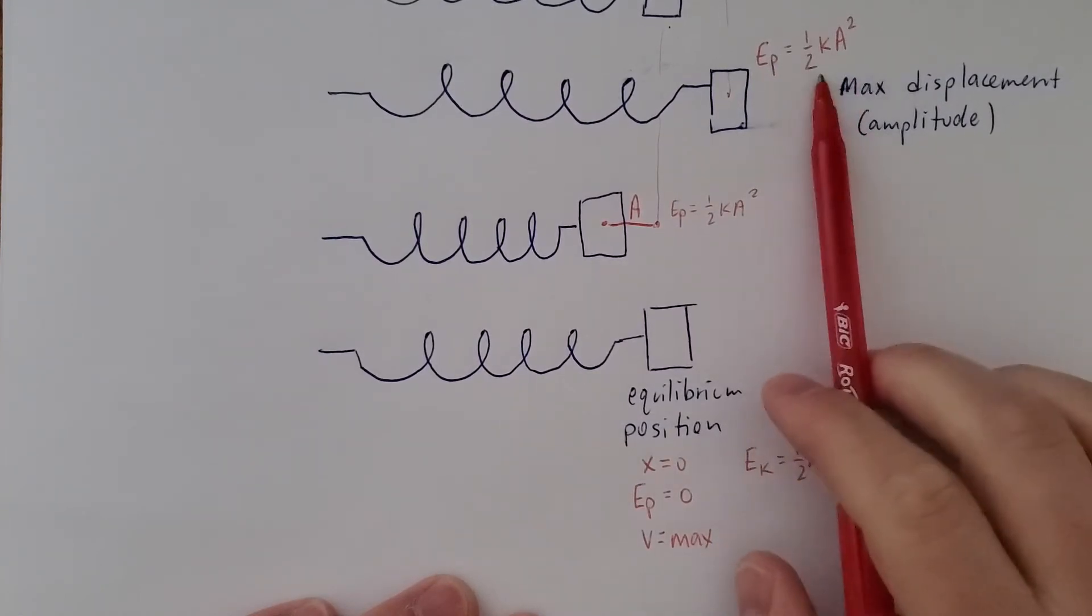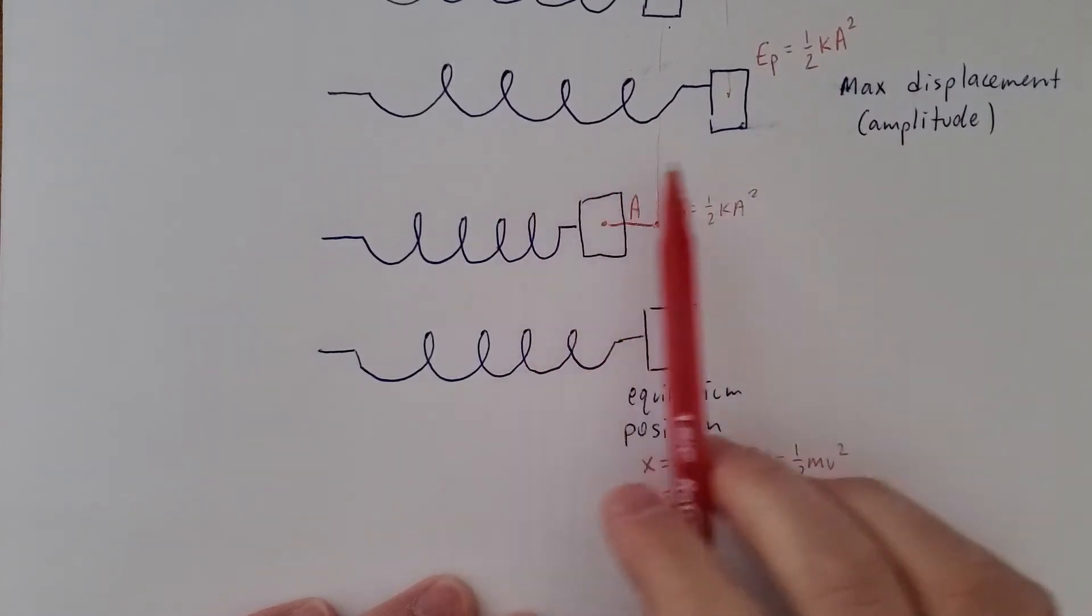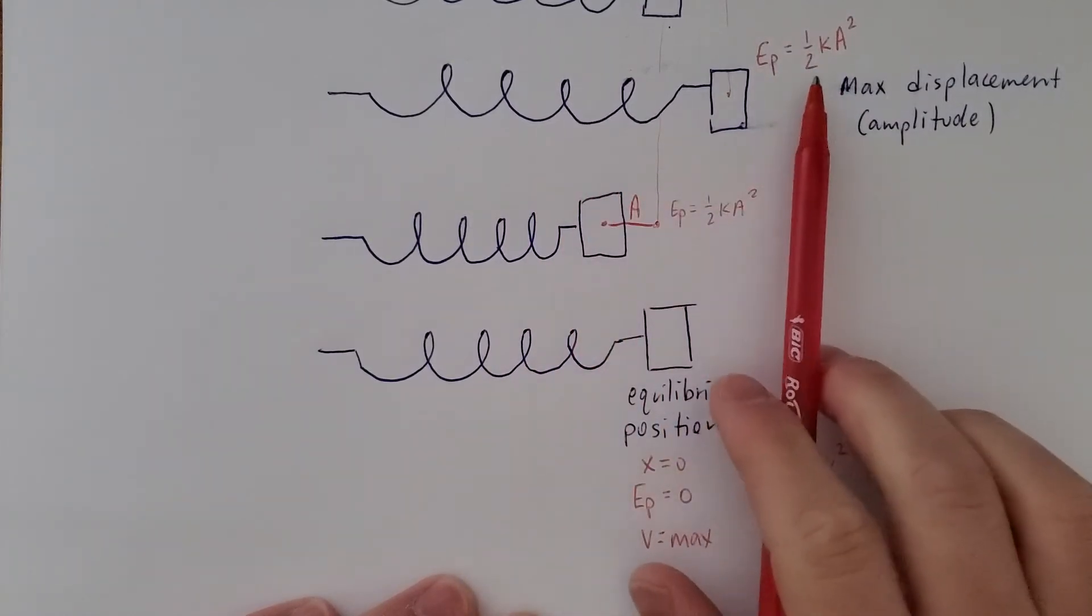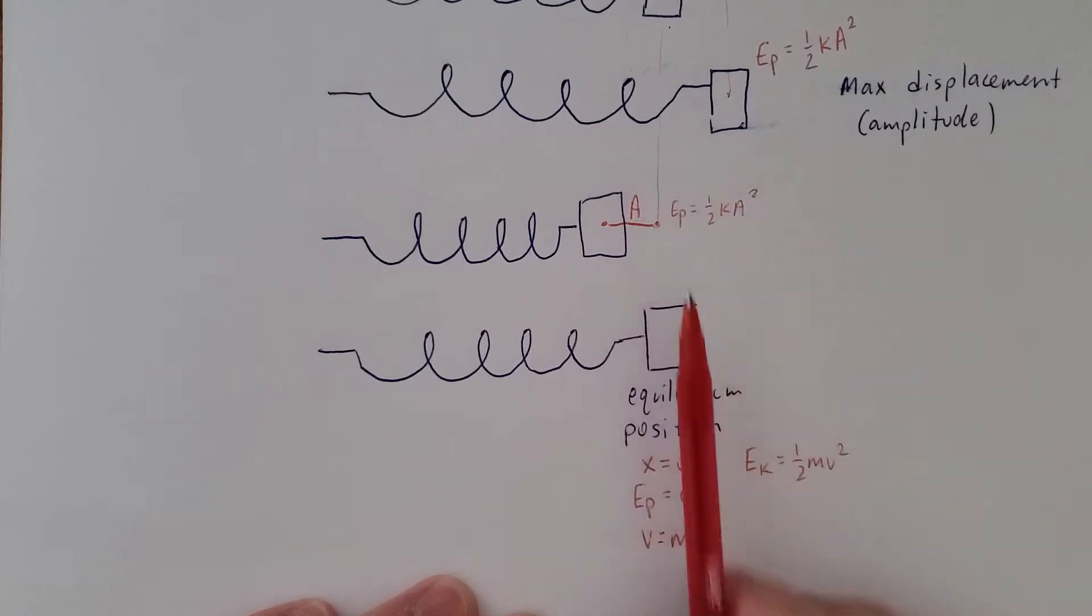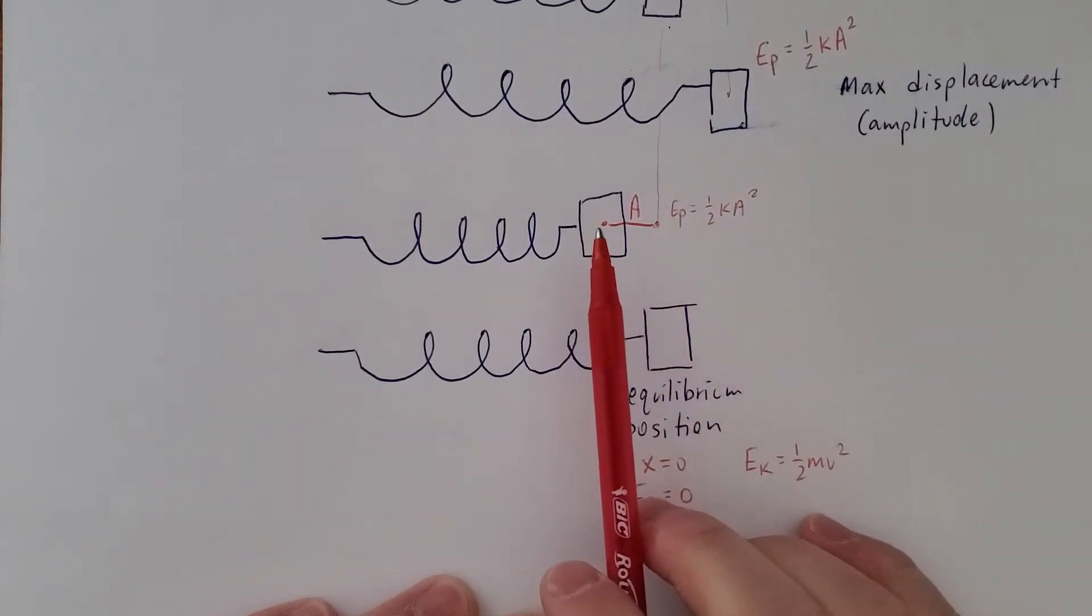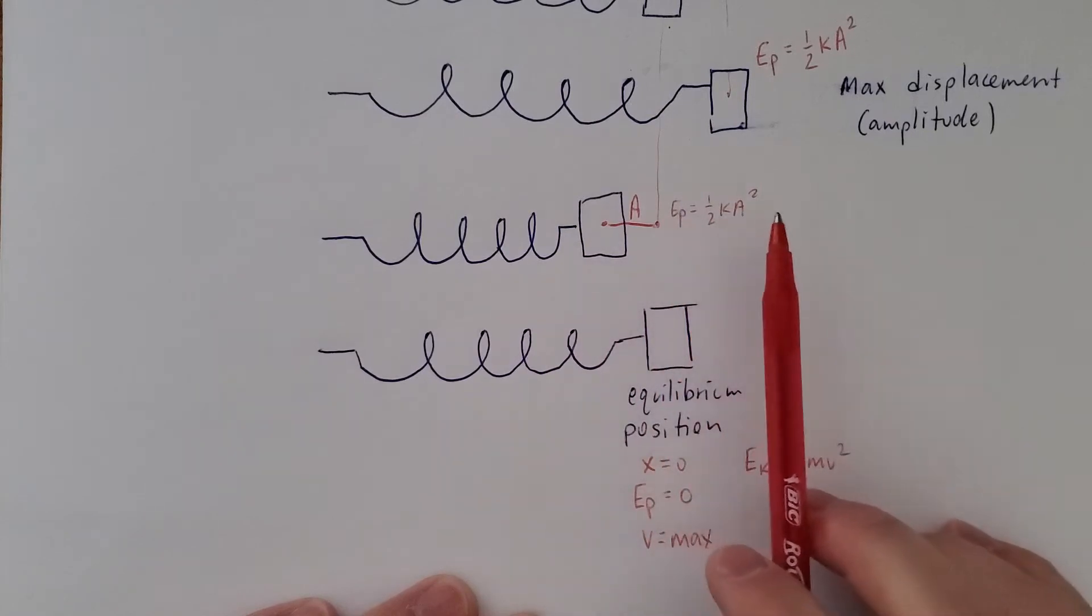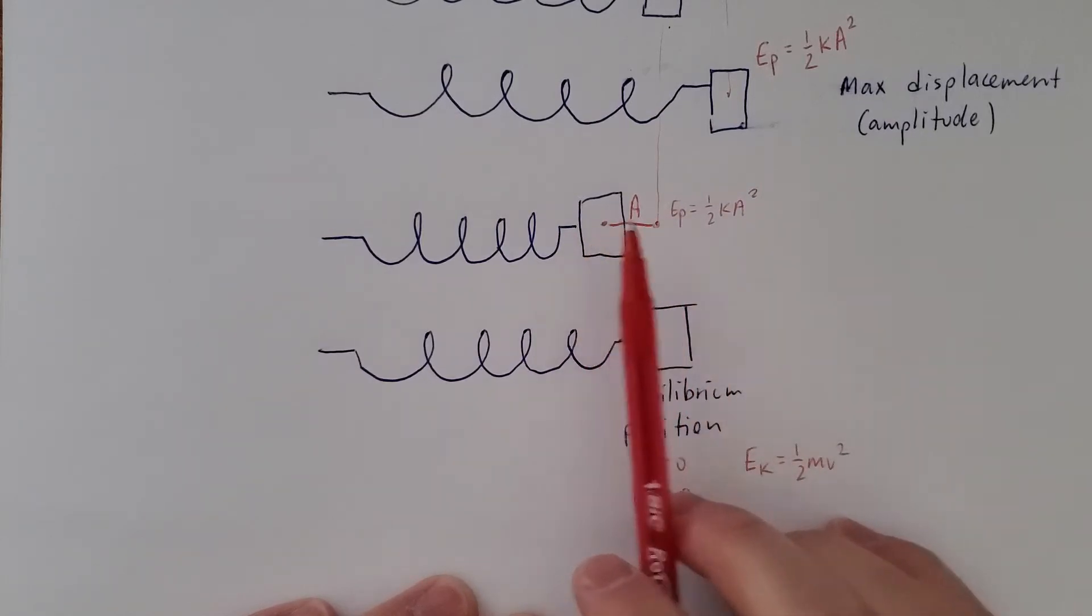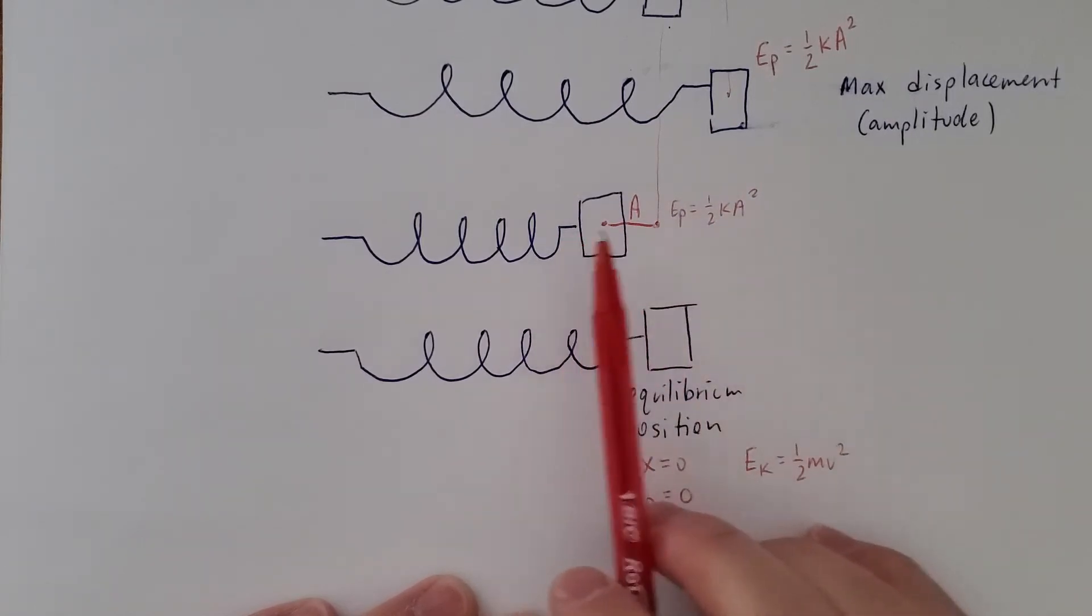So this potential energy, if we're talking about an ideal spring with no friction, is going to convert to kinetic, and it's all kinetic at the equilibrium position, convert back to potential, back to kinetic, back to potential, back to kinetic, back and forth like that.